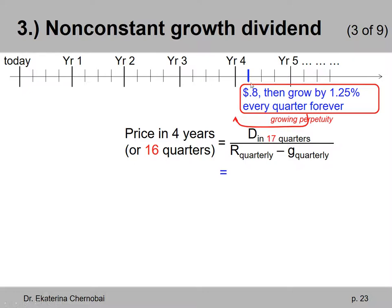So that's the dividend in 17 quarters from today, divided by quarterly discount rate minus quarterly growth rate in dividends. When we use this formula, it will find the discounted sum of the perpetual dividends one quarter before the very first dividend.